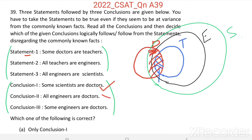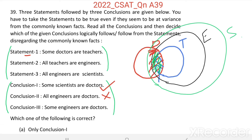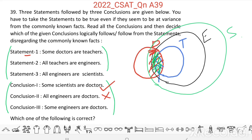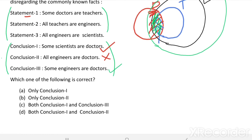Conclusion 3: some engineers are doctors. Some doctors are teachers, and all teachers are engineers, so there is a common area for engineers and doctors. That means some engineers are doctors. Conclusion 3 is correct. From the given options, both Conclusion 1 and Conclusion 3 are correct — option C is the right answer.